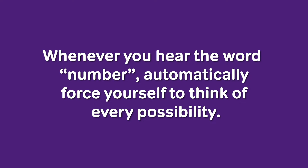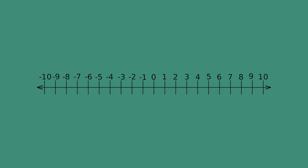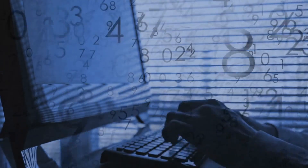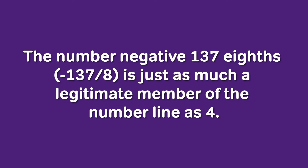Numbers live on what grade school teachers call the number line, and what mathematicians call the real number line — a continuous infinity of values. The more you think about the idea of continuous infinity, the more it boggles the mind. The real number line is a realm of perfect fairness; the number negative 13⁄7 is just as much a legitimate number on the number line as 4.